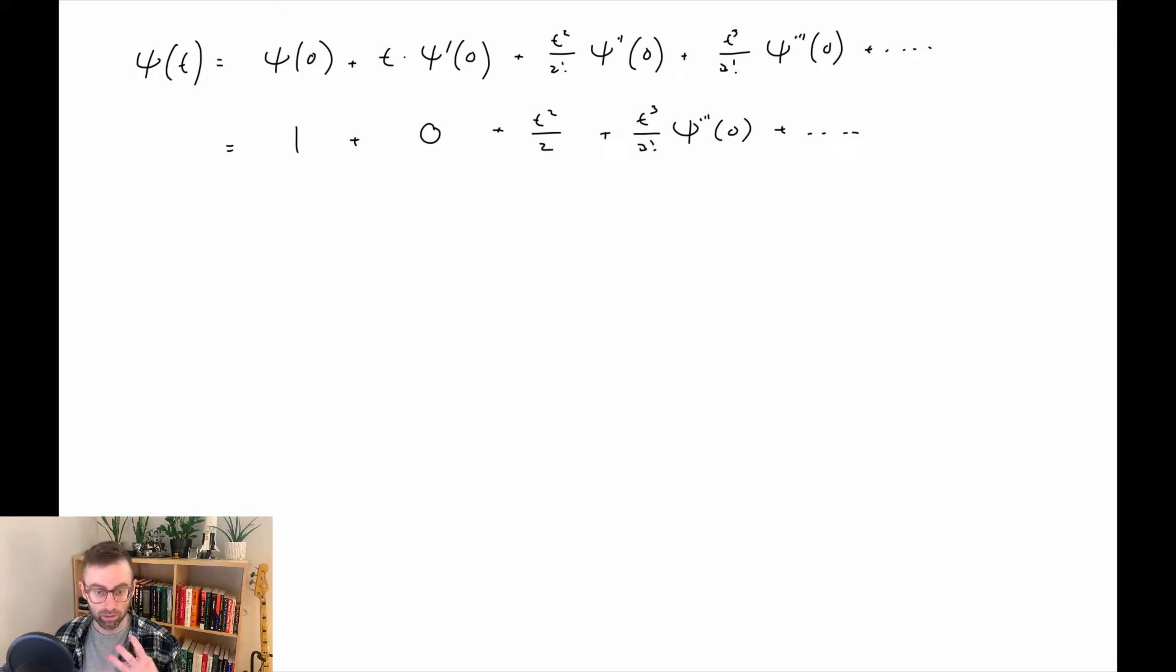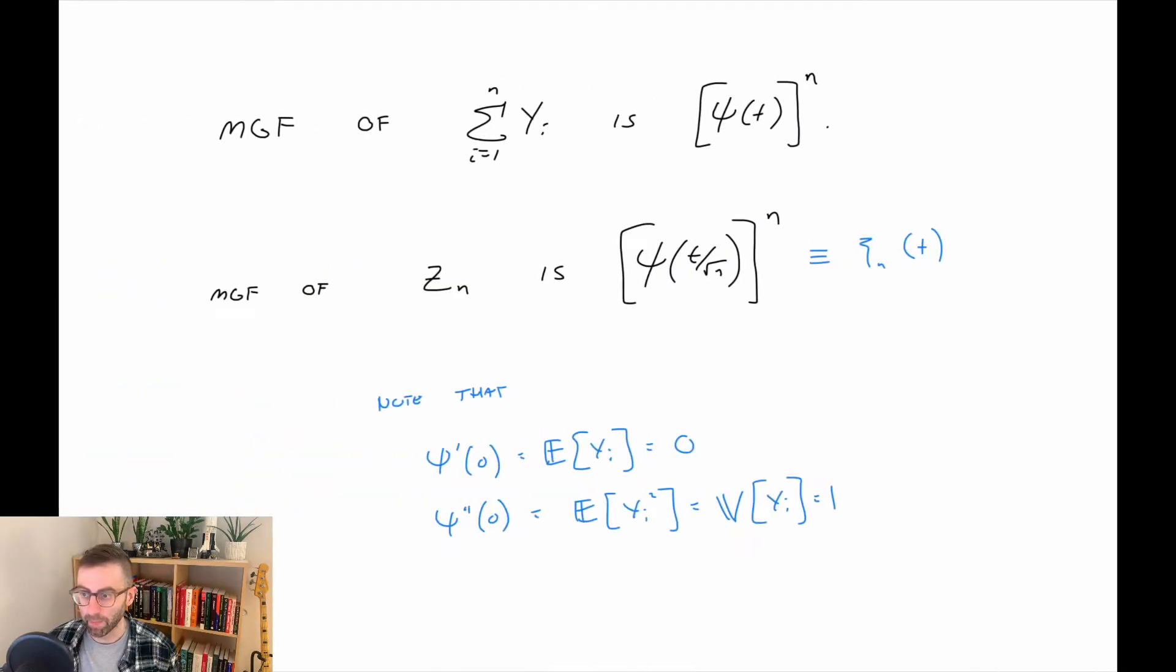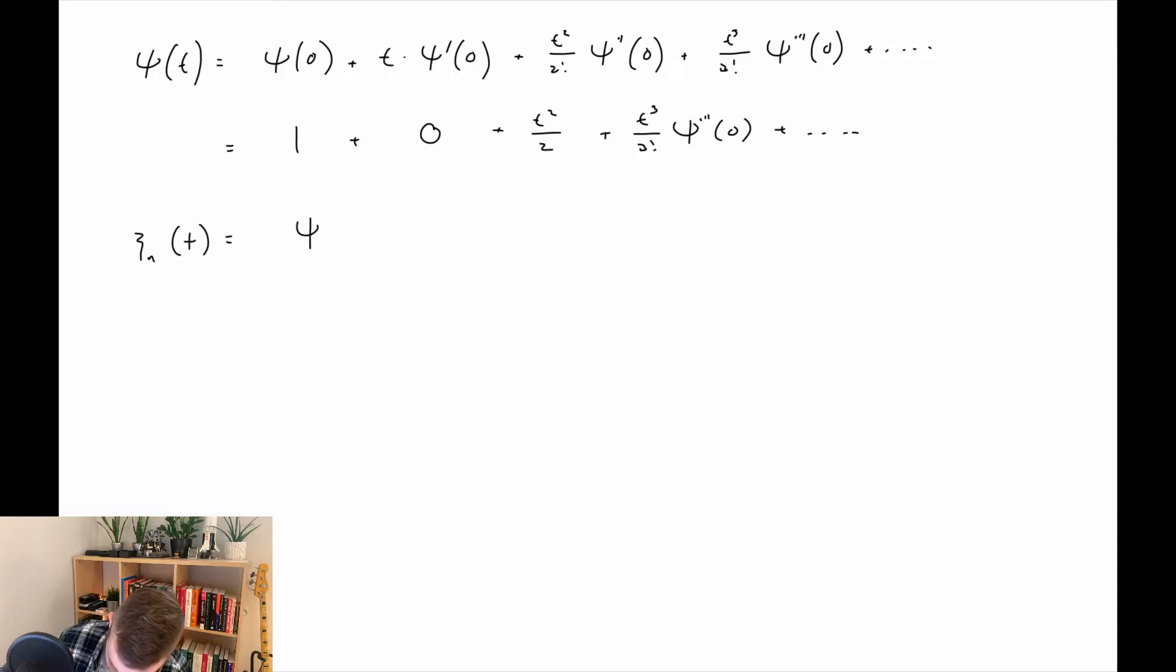So now we want to look at the moment generating function of z sub n. Remember notationally this is the moment generating function of z sub n, the one we're truly interested in. This is the moment generating function of y, but with some modifications. So now we just need to plug in. This is going to be one plus t squared over two n.